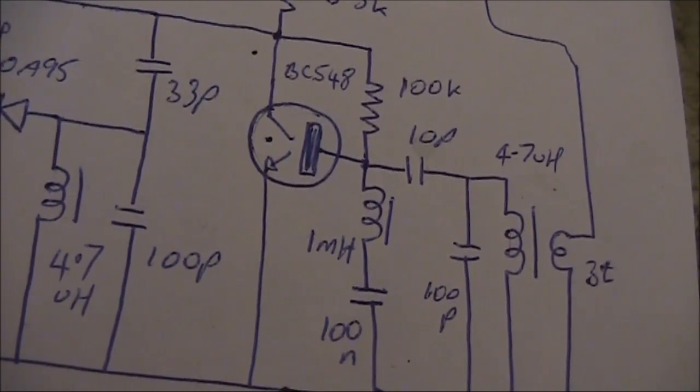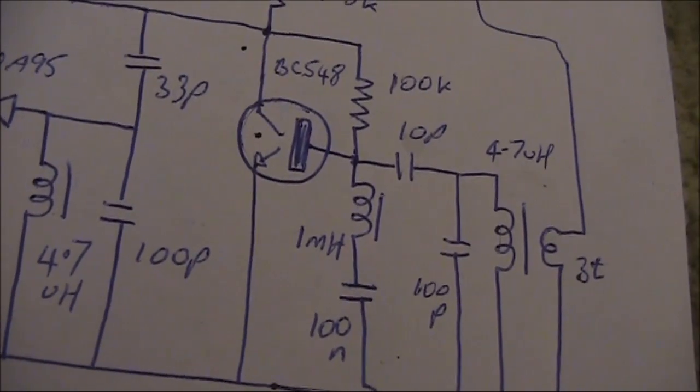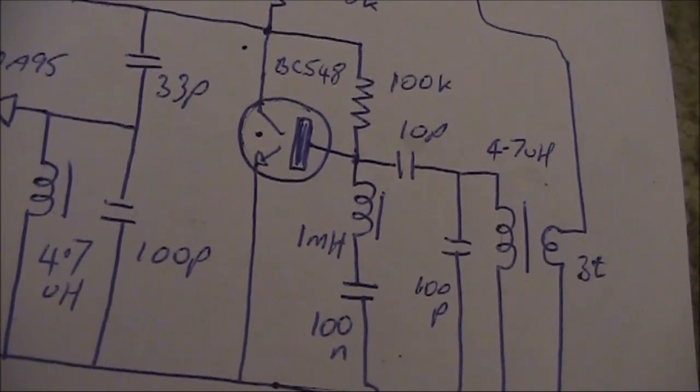Another thing you could do, if you wanted to loosen coupling, you could go down to 2 turns on the primary instead of 3, or if you wanted to tighten it, then go to 4 turns.